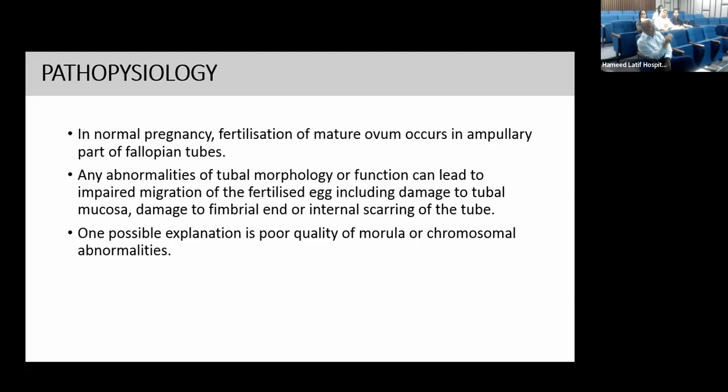Essentially, pelvic inflammatory disease, ascending infection, and especially surgery — which affects both the anatomical and physiological function of the tube — are key causes. The physiological function refers to the effect of the ciliary epithelium of the tubal mucosa, which is responsible for moving the fertilized egg from the fimbrial end towards the uterus. If their function is compromised, there is likelihood of the egg getting stuck in the tube.